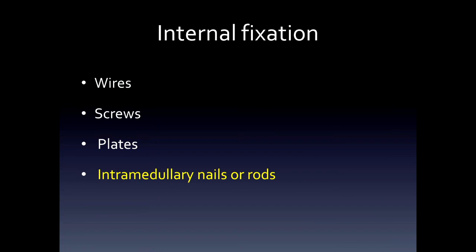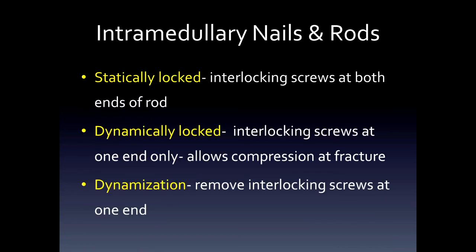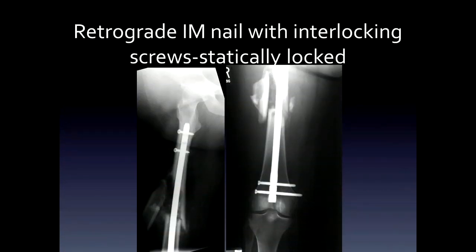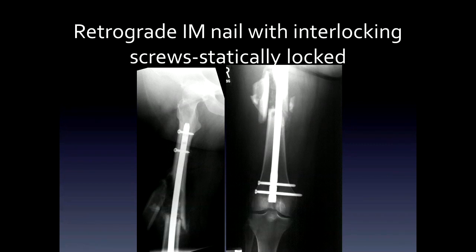Finally, intramedullary nails or rods. These are held to the adjacent bone by interlocking screws. It's termed statically locked if the interlocking screws are at both the proximal and distal ends — usually used when the fracture is highly comminuted so that the fracture would otherwise shorten. Dynamically locked means interlocking screws at only one end, allowing compression of the fracture when you stand. Dynamization refers to removing an interlocking set of screws at one end, allowing the fracture to compress. This is an example of a comminuted fracture held by a retrograde nail — it's retrograde because the tip is proximal and it's inserted from the distal end, with interlocking screws both distally and proximally.